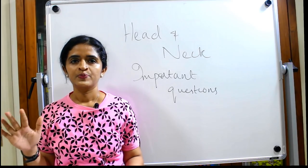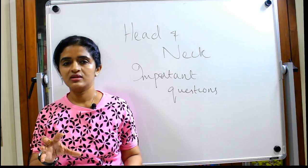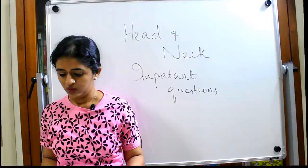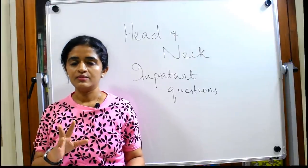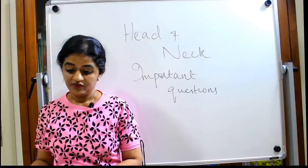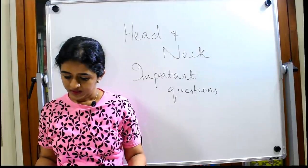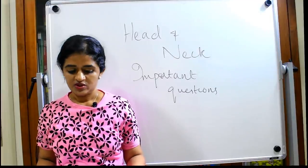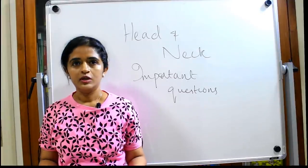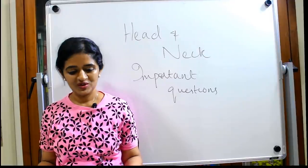You should not leave the parotid gland chapter — know the entire relation, how the gland is seated, its innervation, blood supply, and the applied aspects: mainly mumps and Frey syndrome. The parotid duct alone was once asked as a short note. The parasympathetic secretomotor fibers via the otic ganglion — I have done a separate session on that if you want to check.